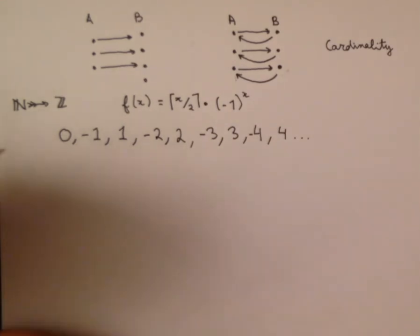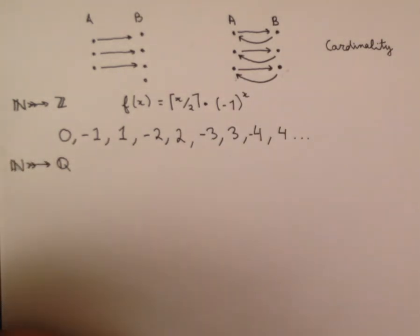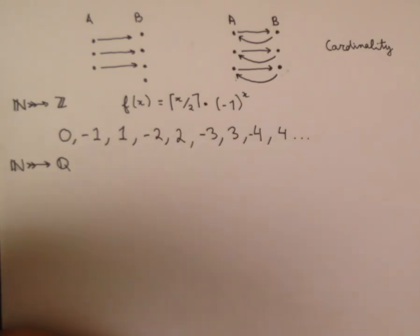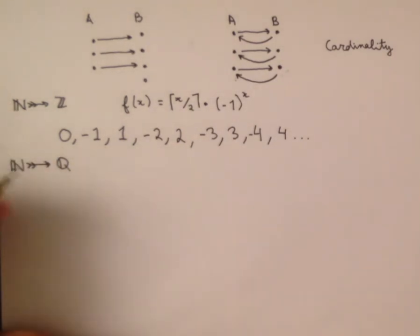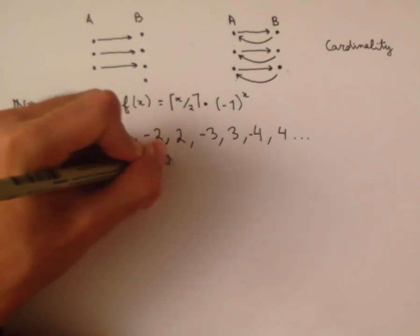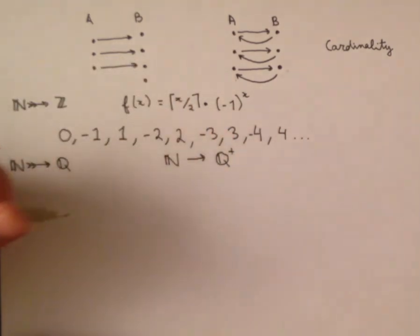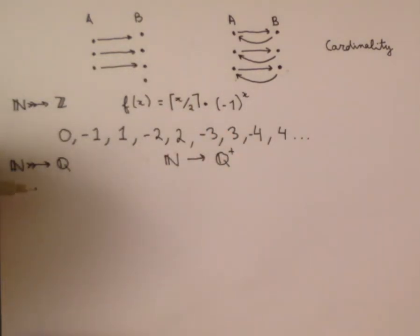Another bijection that exists is one from the natural numbers to the rationals. It might seem like there are a lot more rationals than natural numbers, because between any two natural numbers there are infinitely many rationals. But there is in fact this bijection. I'm actually going to show a bijection from the natural numbers to the positive rationals, and then using the technique shown earlier, you can probably come up with the full one on your own.